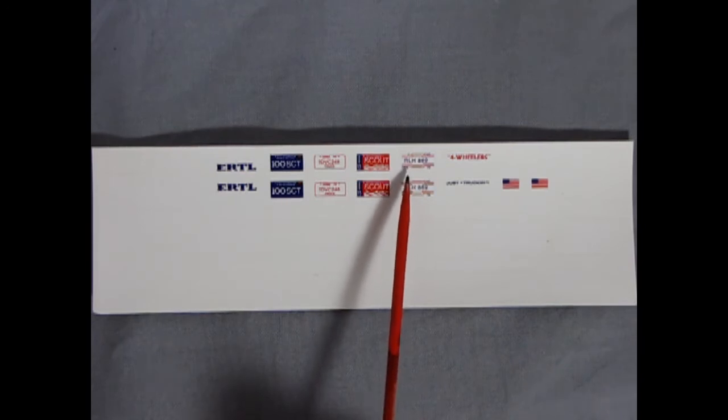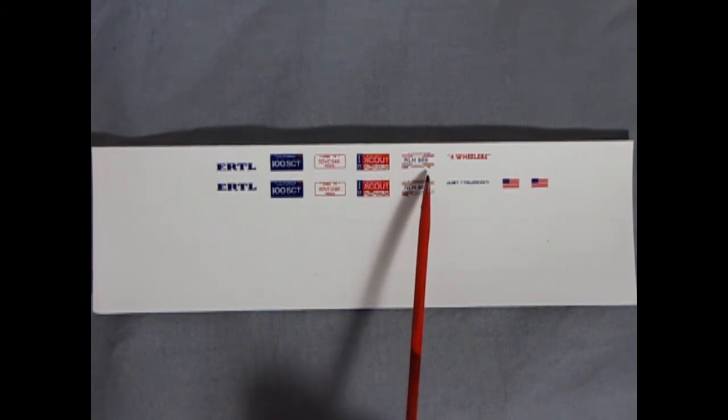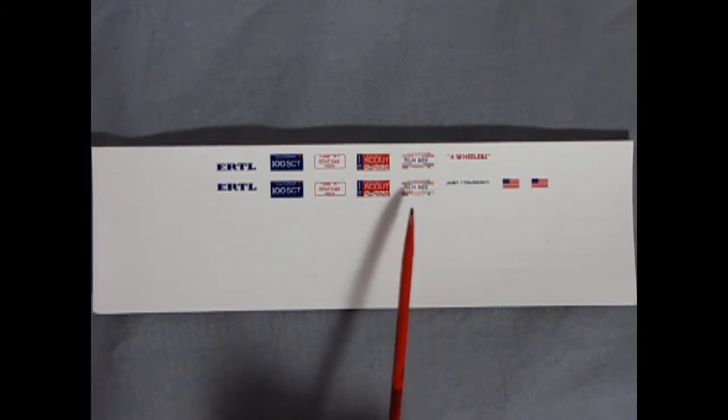So maybe this is a universal license plate for the states. I'm not sure about it because I'm up here in Canada. Maybe you guys know. But it does have 76 on there. And then we have bumper stickers, four wheels, and just trucking. Keep on trucking. And of course, our USA flag.